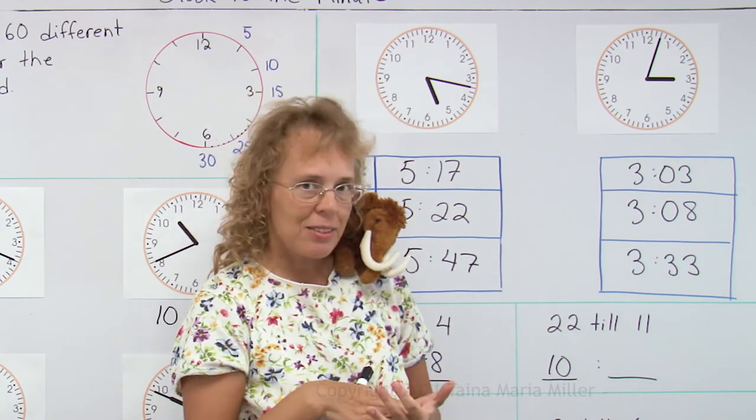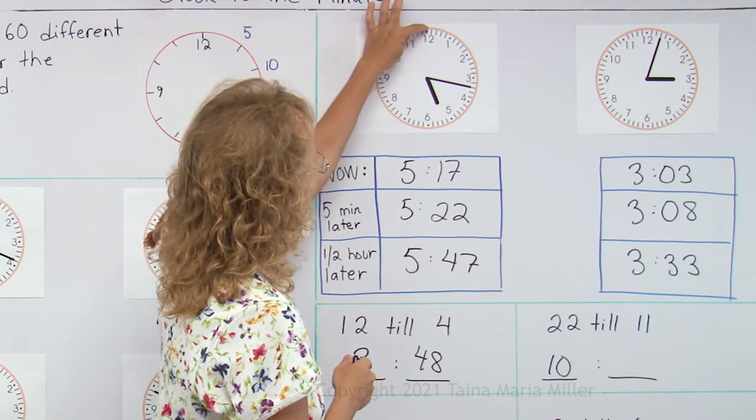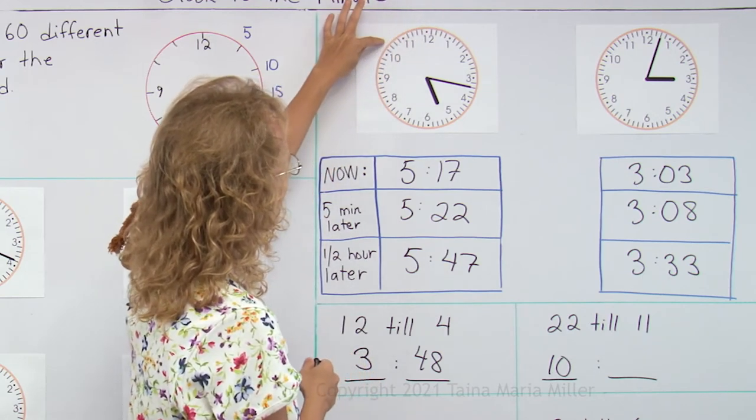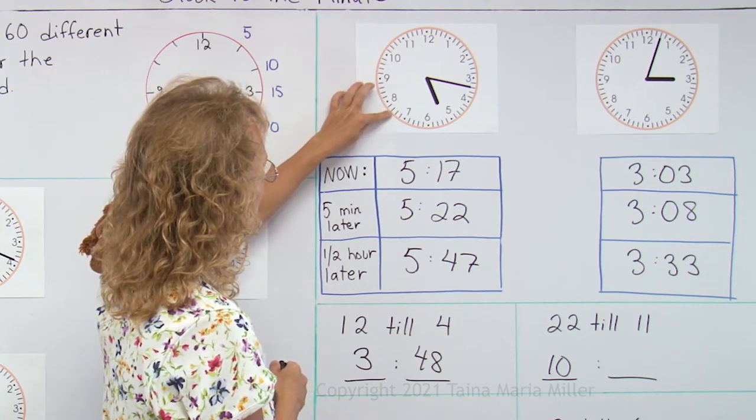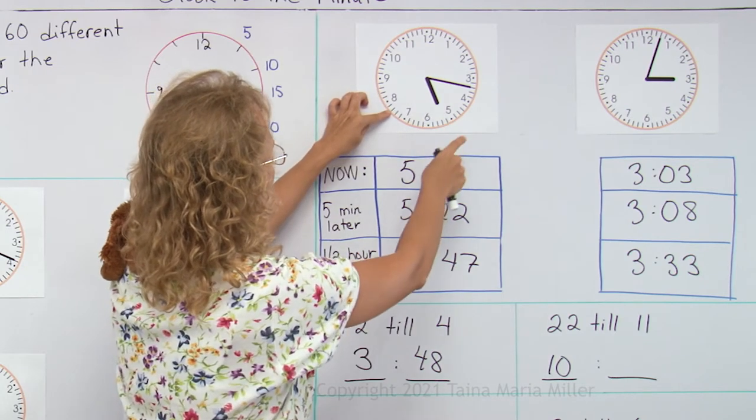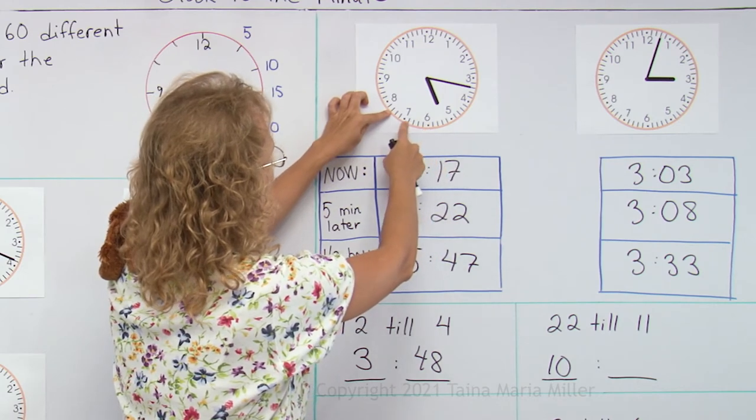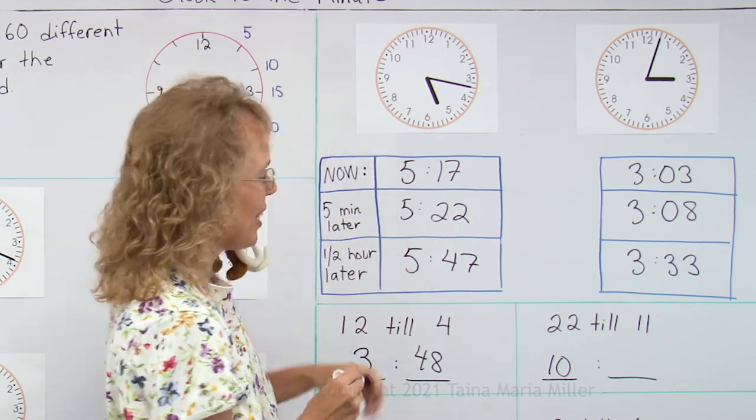22 minutes till, again, you could look at the clock here, go 22 minutes backwards from here. 5, 10, 15, 20, and two more. It's this one here. So in the minutes, hours and minutes way, we have 30 minutes, 35 plus 3 or 38 minutes.